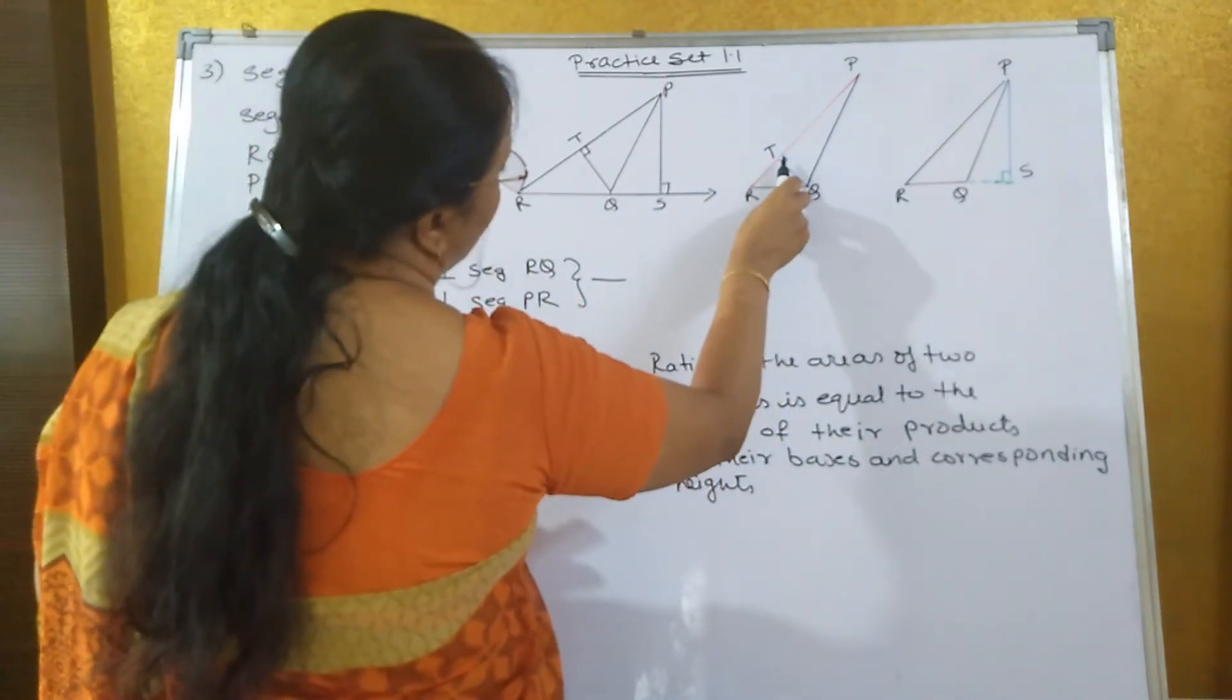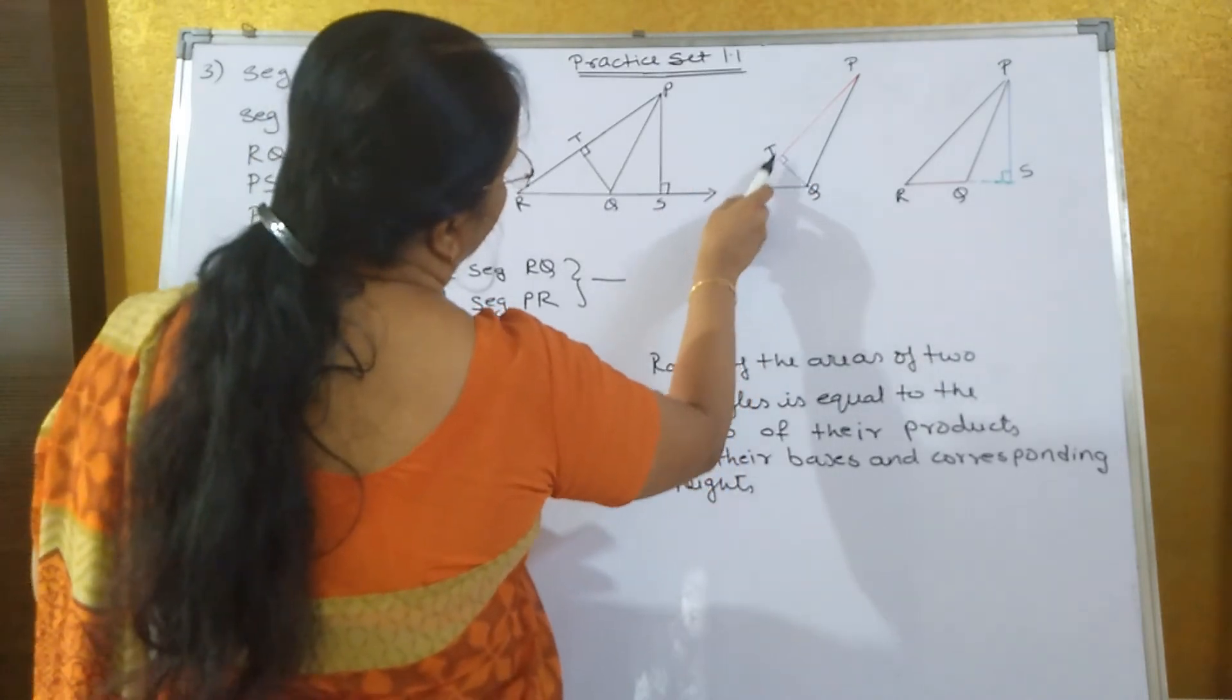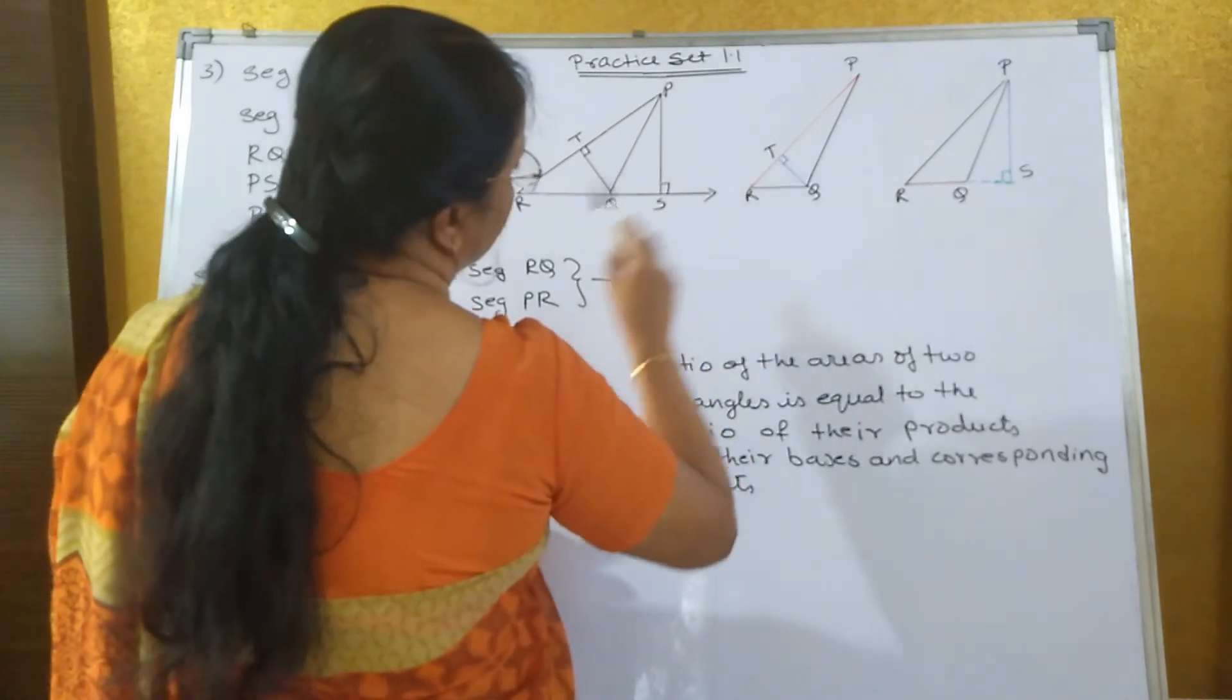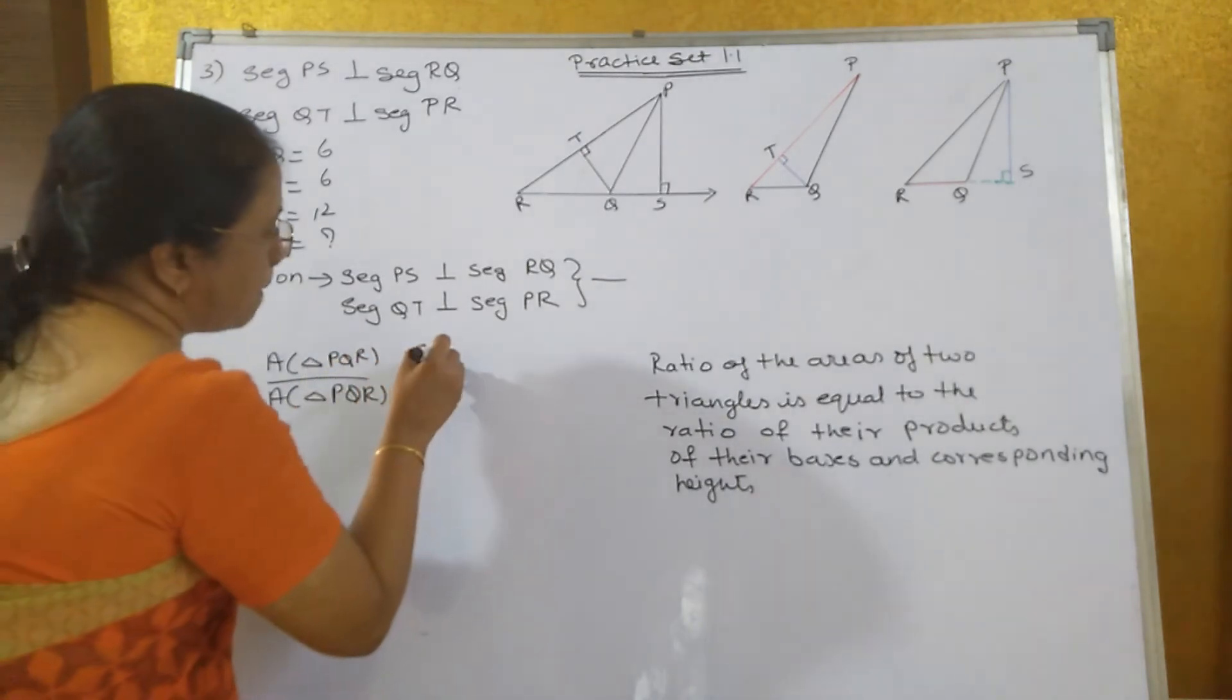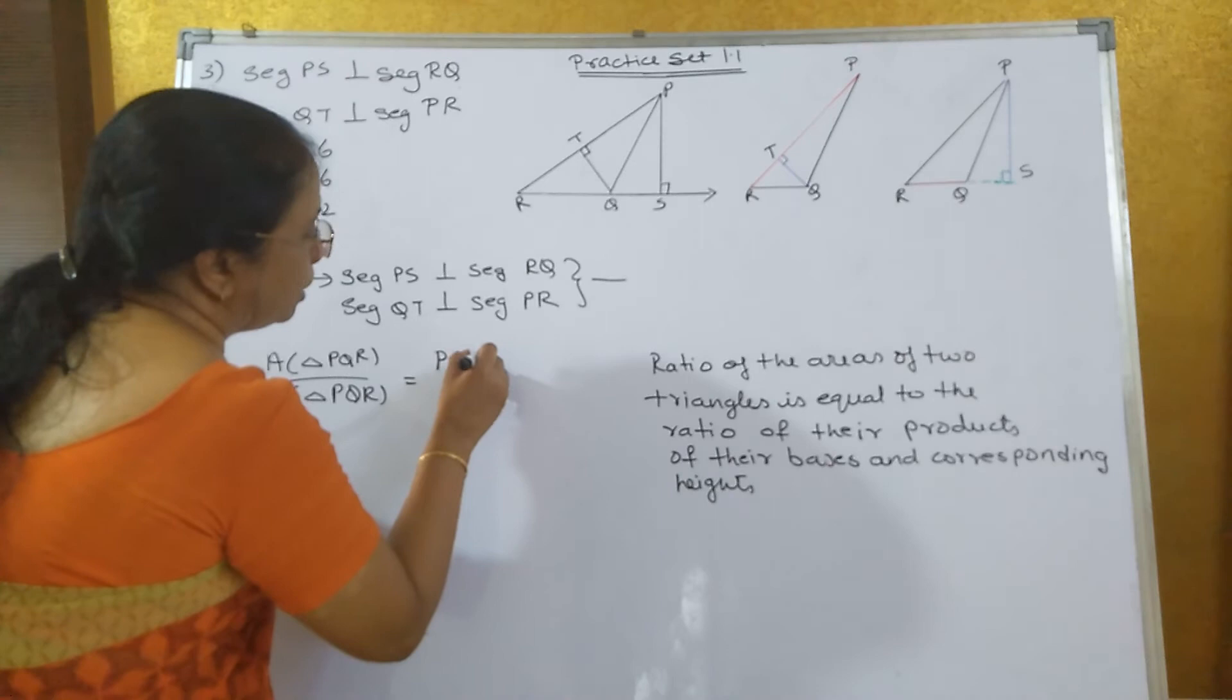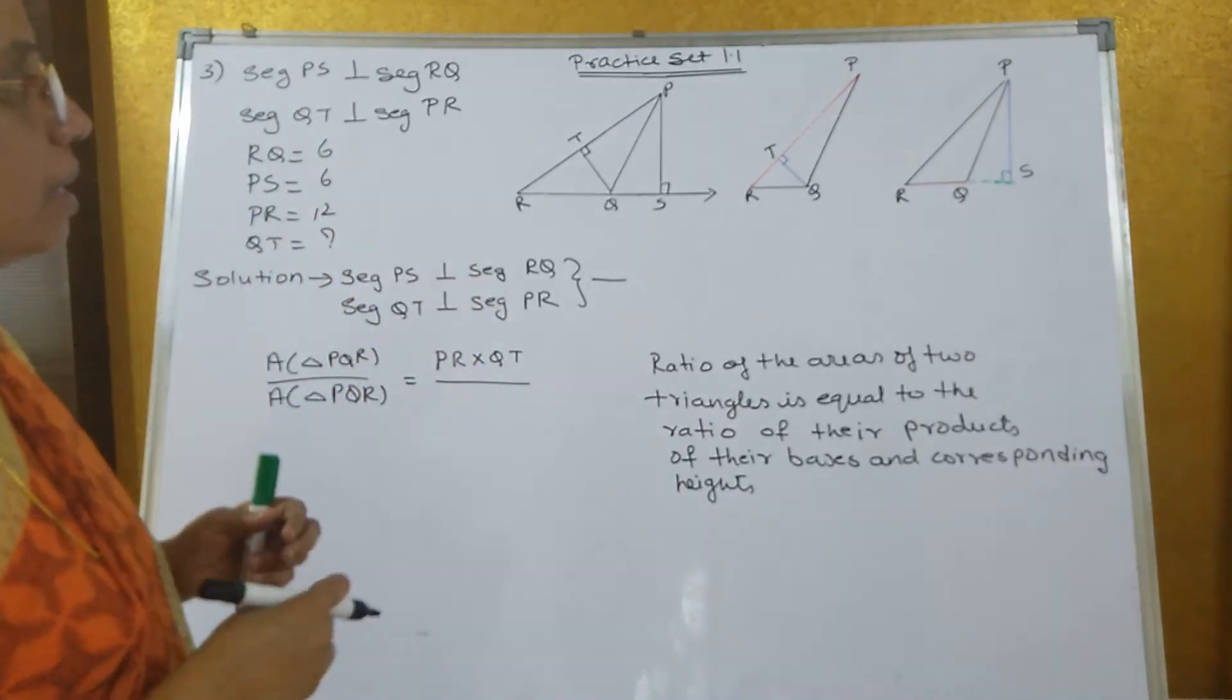I have told you before, height always has this sign and it stands on which side? It stands on PR, so PR becomes its base and QT becomes its height. So area of triangle PQR is equal to what? Base PR into height QT.